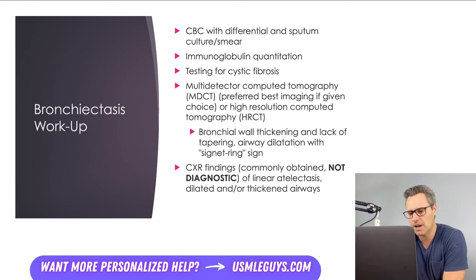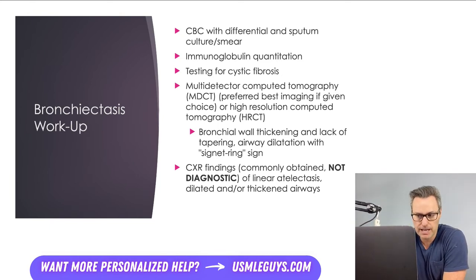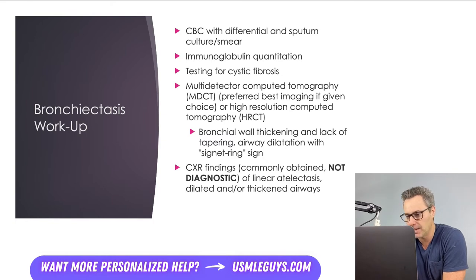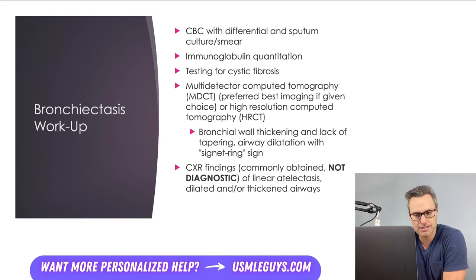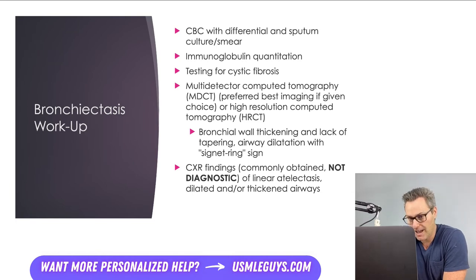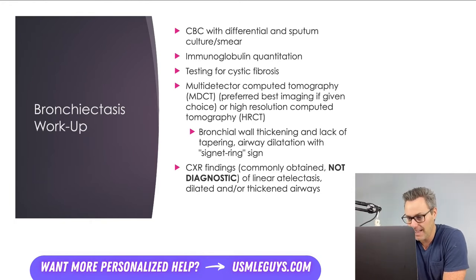Both CT modalities should detect bronchial wall thickening and lack of tapering, and identify airway dilation with a signet ring sign — caused by the dilated bronchus and pulmonary artery branch seen in cross-section. Chest x-ray findings, while commonly obtained, are not diagnostic and may show linear atelectasis and dilated or thickened airways.